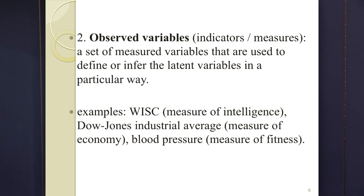If that's all we had, we wouldn't be able to do very much. So we have observed variables — actual measures of those latent variables. Observed variables are designed to measure those constructs in a particular way. For instance, the Bayley-Wechsler intelligence scales are one measure of intelligence, the Dow Jones is a measure of the economy, and blood pressure is one measure of fitness. These two types of variables are inherent in most quantitative methods.